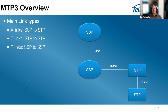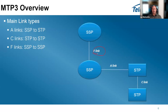When talking about MTP3 we also discuss link types, which depend on what the link connects. An A-link connects an SSP to an STP; a C-link connects two STPs together; and an F-link connects two SSPs together. There are also B, D, and E links connecting different elements in the network. On the TelcoBridges side nothing changes - all link types are supported. This nomenclature is just a way to present what type of MTP3 link you have.